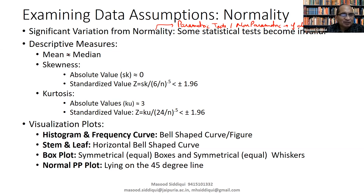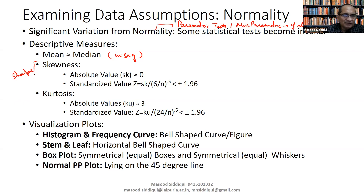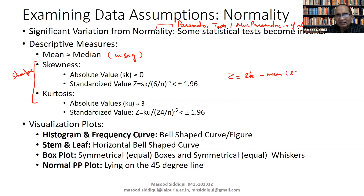How do we check whether our data is normal or not? If there is no significant difference between mean and median, then we can say our data is normal. We also have two shape parameters: one related to symmetricity — that is skewness — and the other related to flatness, that is kurtosis. The absolute value of skewness for normal distribution is approximately zero, and the absolute value of kurtosis is around three.